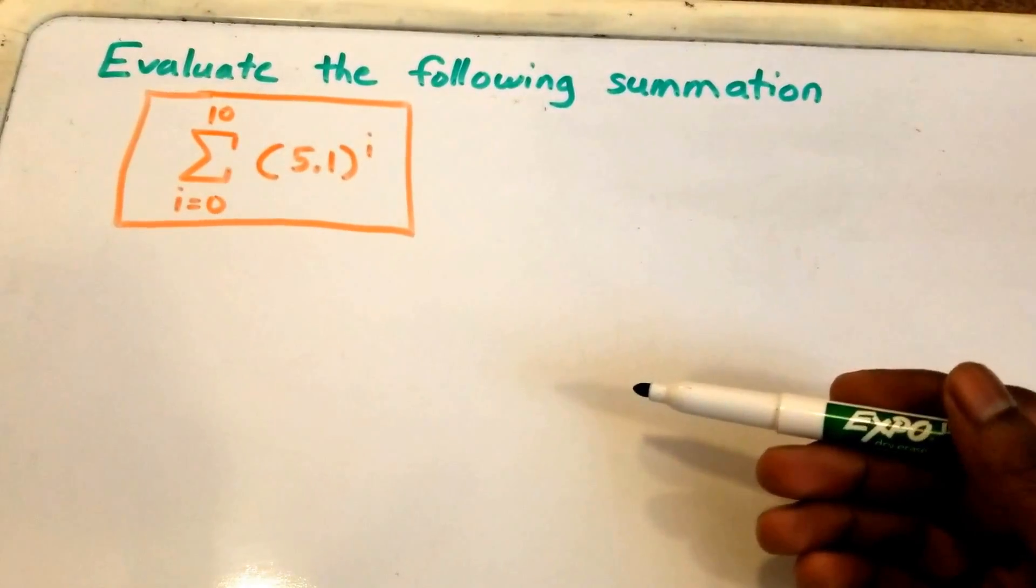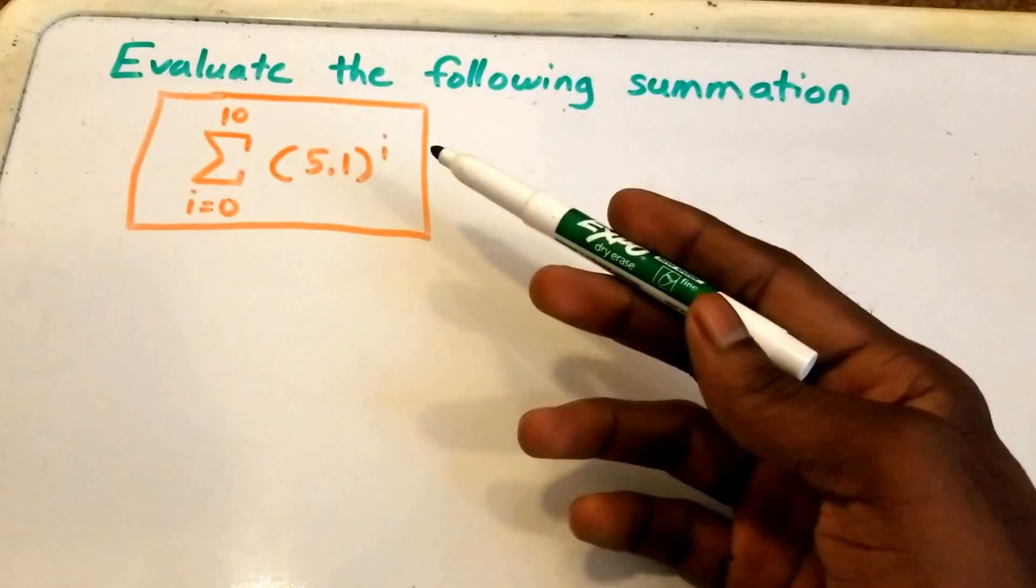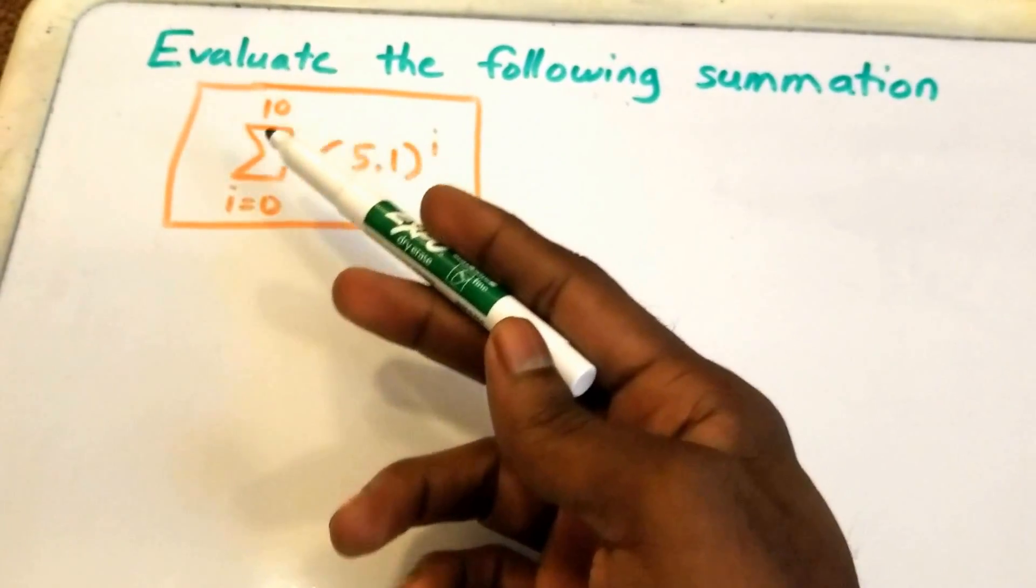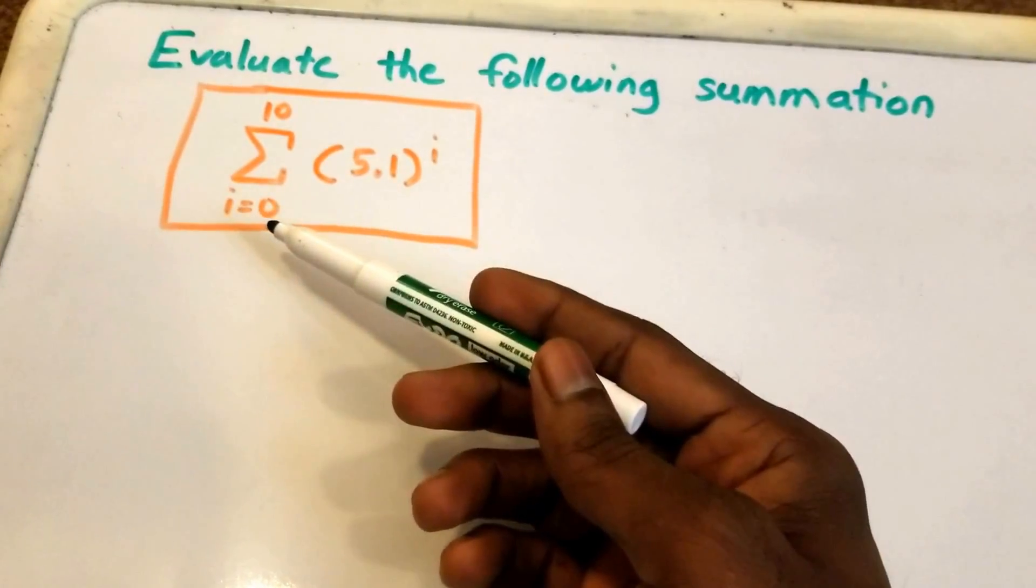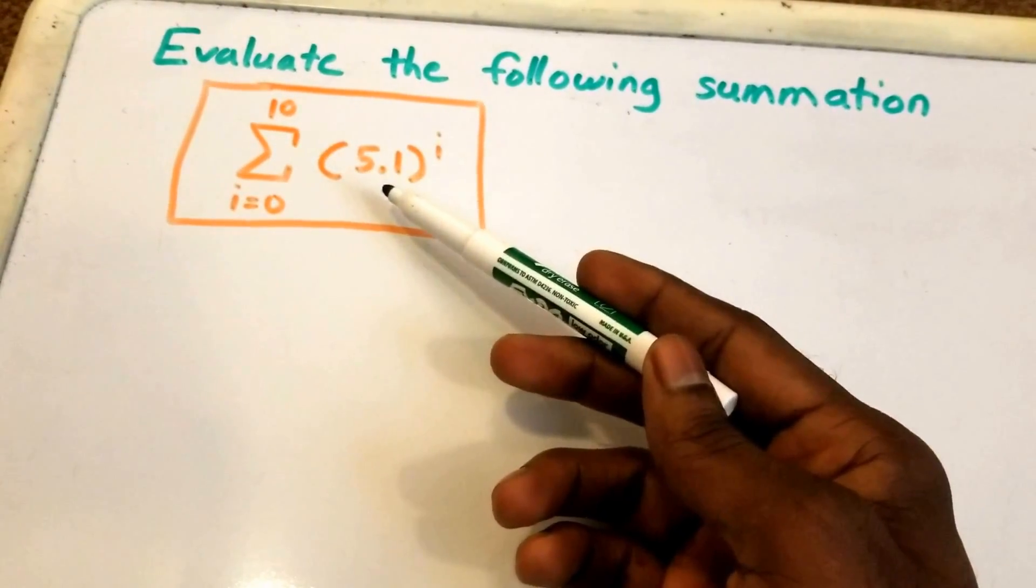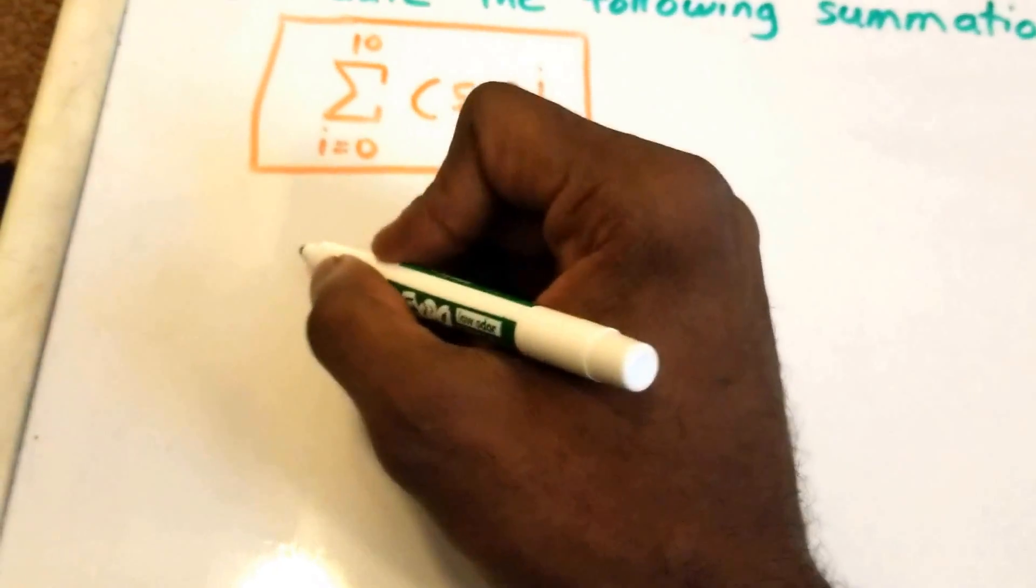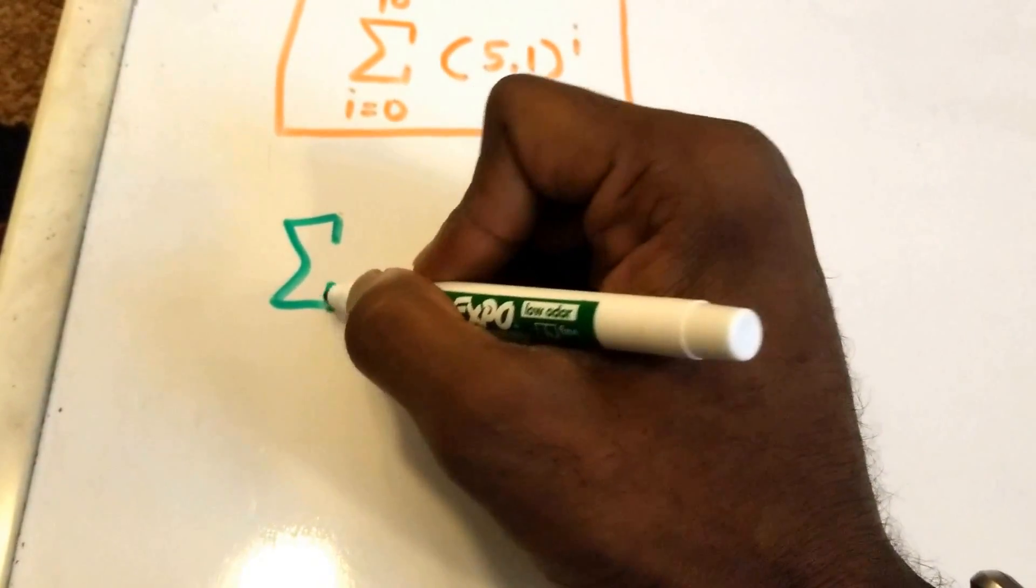Hey guys, welcome to this video on summations. We have our problem: we want to evaluate the following summation here in the orange rectangle. It runs from i equals 0 to 10 of (5.1)^i, so we're going to go ahead and try to solve this summation.